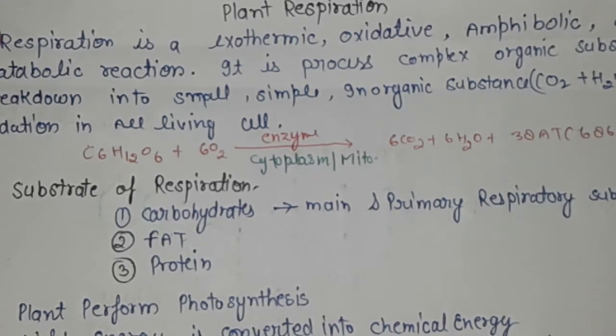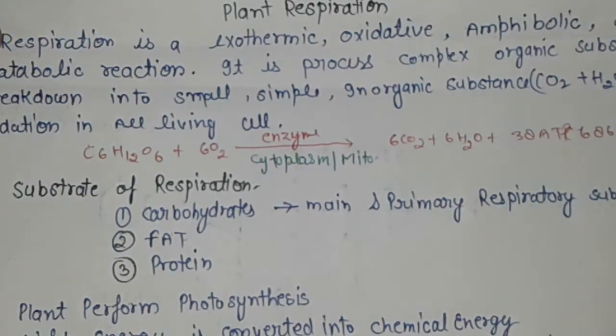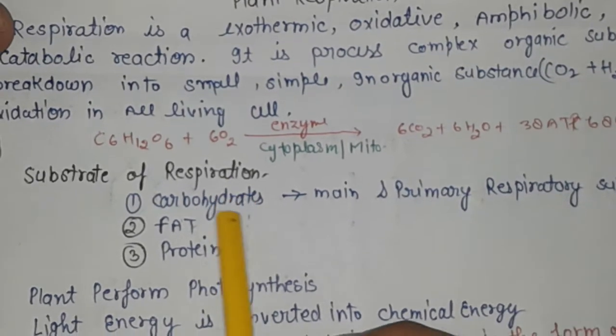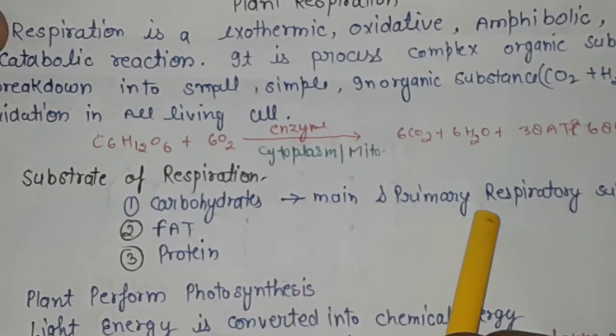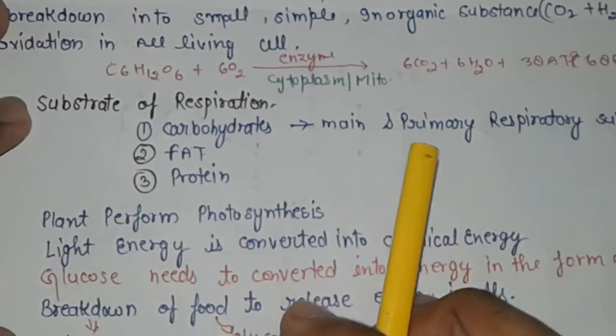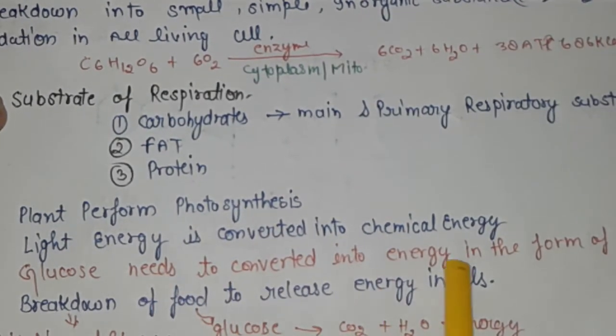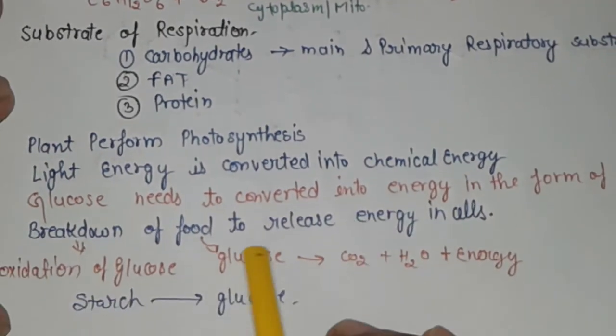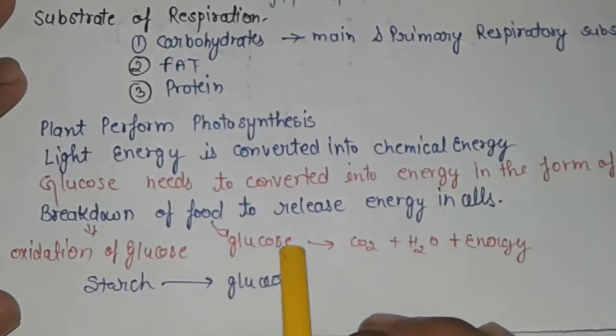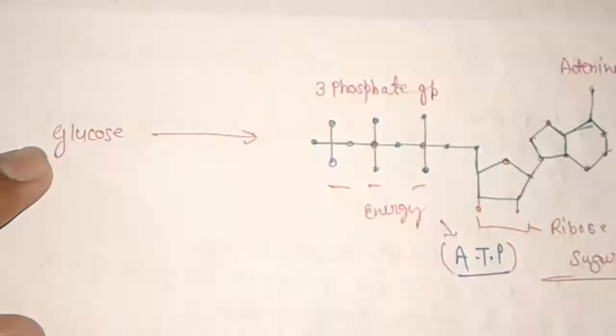The substrate substances of respiration are carbohydrates as the main primary substance, and also fat and protein. Plants perform photosynthesis where light energy converts into chemical energy. Glucose needs to convert into energy in the form of ATP. Breakdown of food releases energy in cells. That breakdown means the oxidation of glucose to carbon dioxide and H2O releasing energy.